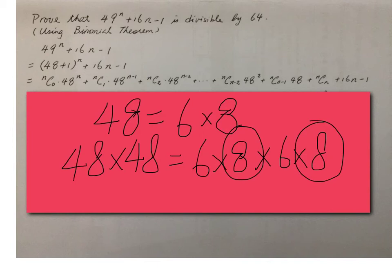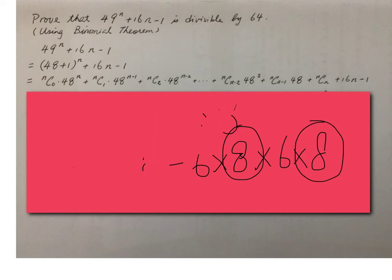That's why it means if for the terms having 48² or higher powers of 48, they all contain the factor 64. That's why we can take this common factor, 48² first, from the first few terms.